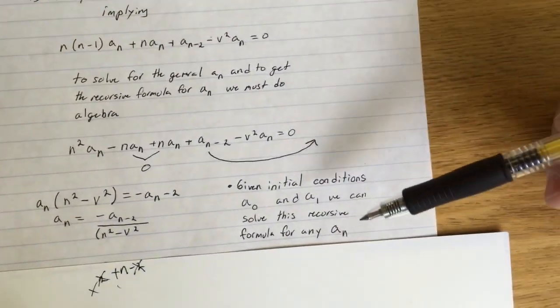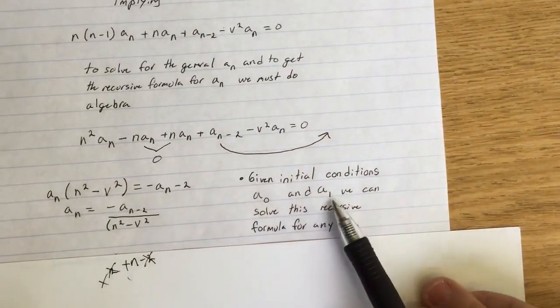So to be able to solve for this, you need to have the initial conditions, a_0 and a_1.